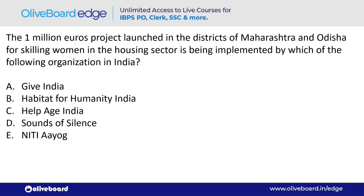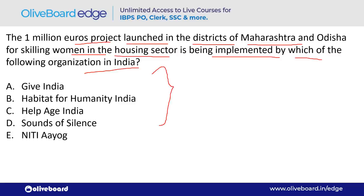The 1 million euro project launched in districts of Maharashtra and Odisha for skilling women in the housing sector is being implemented by which organization in India? The answer is Habitat for Humanity India — option B.